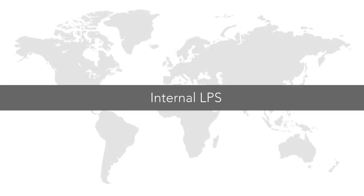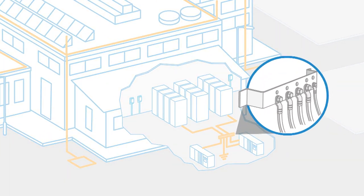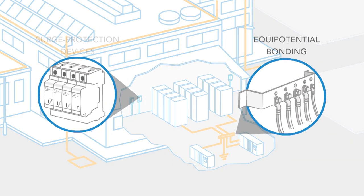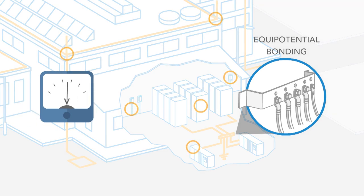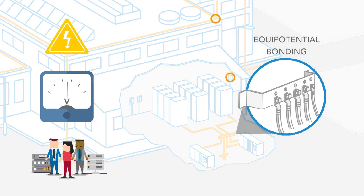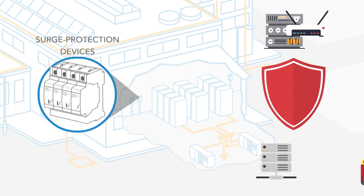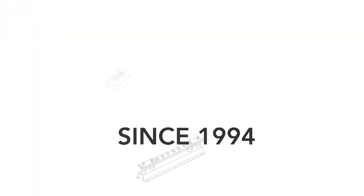Internal LPS: The two major components of internal LPS are Equipotential Bonding and Surge Protection Devices. The purpose of Equipotential Bonding is to bring all the metallic parts and equipment in a structure to the same voltage potential to avoid hazards to human life or other damage. SPDs protect electronic devices by breaking the circuit in case of an equipment or system fault.